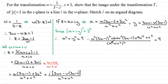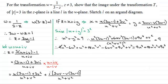Multiplying both sides by u squared plus v squared all squared gives the top equaling 9 times u squared plus v squared all squared. Expanding the right-hand side: squaring the bracket gives u to the power 4 plus 2u squared v squared plus v to the power 4, and multiplying by 9 gives the expanded result.